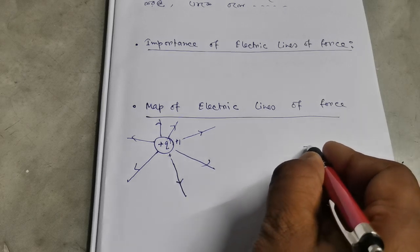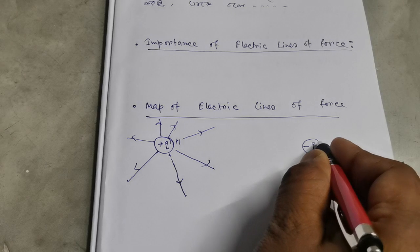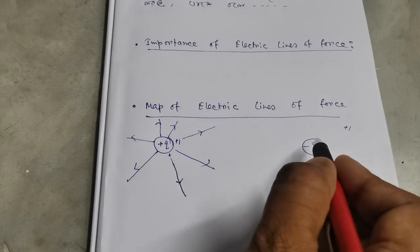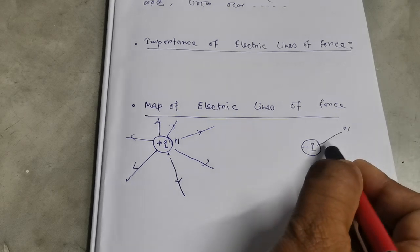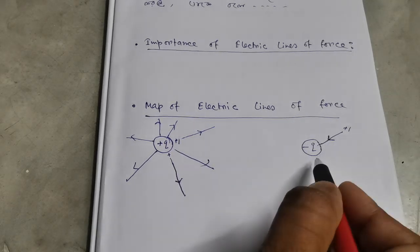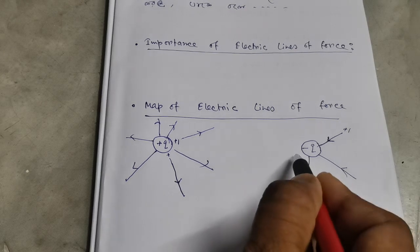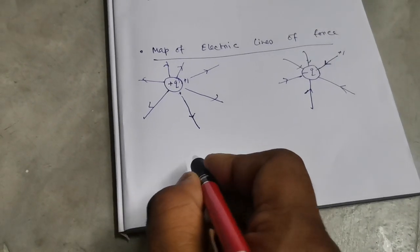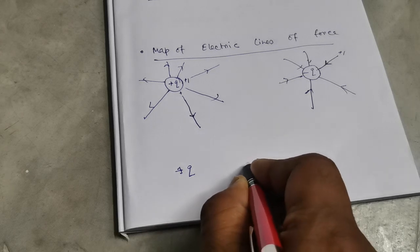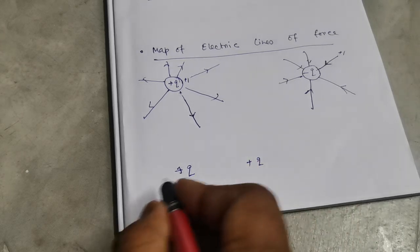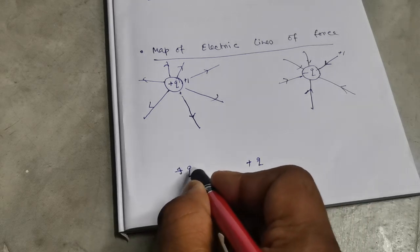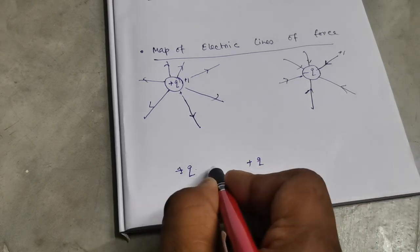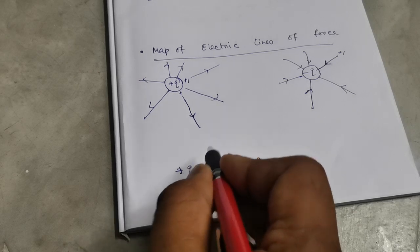This is the plus Q charge. What does the minus Q charge mean? This is the direction. This is the electric lines of force. What will the minus Q charge mean? This is the plus Q and plus Q. This is the plus charge. If it is not a straight line, this is the plus 1 charge.